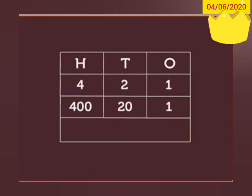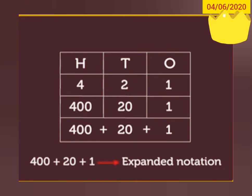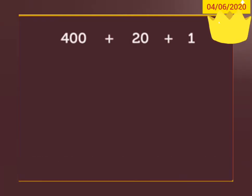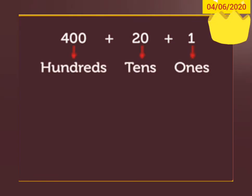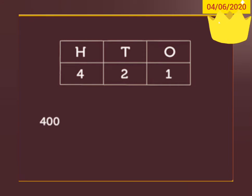Thus, we get 400 plus 20 plus 1, which is the expanded notation of the number 421. Here, 400 plus 20 plus 1 is called the expanded form.